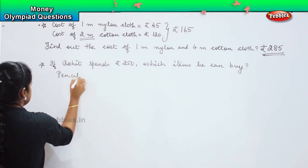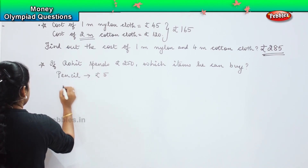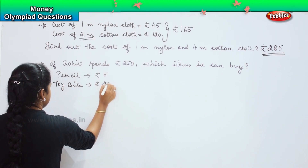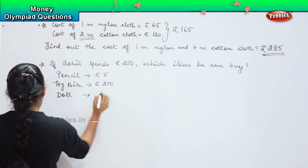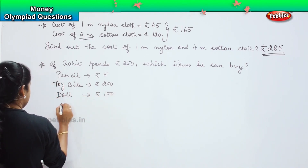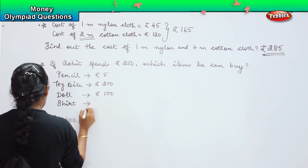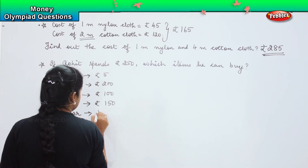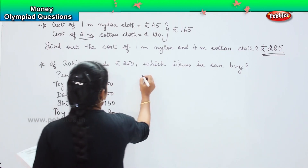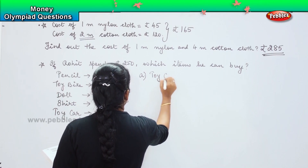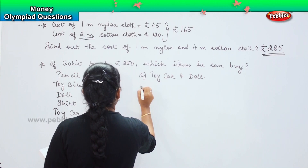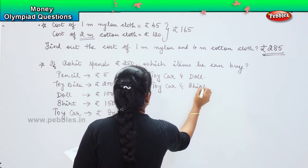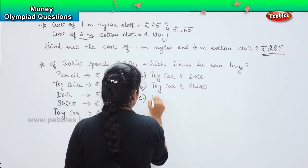A pencil is rupees 5, a toy bike is rupees 200, a doll is rupees 100, a shirt is 150, and a toy car is 80 rupees. The options are: A) toy car and a doll, B) toy car and a shirt, C) doll and a pencil.